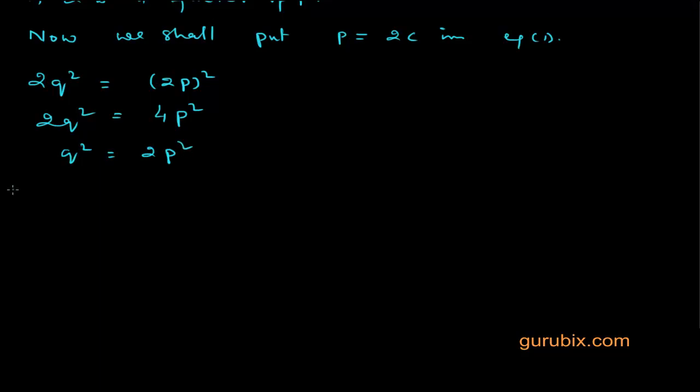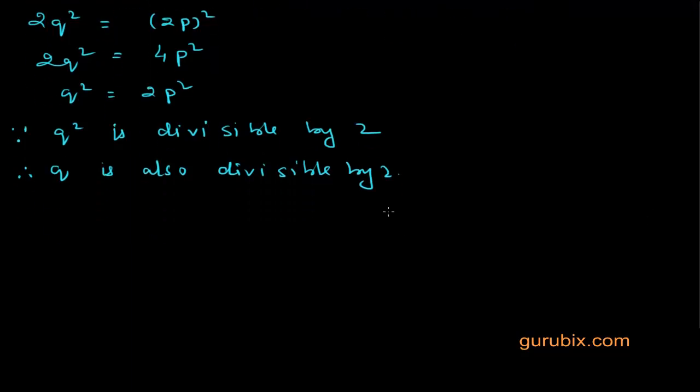Now what we observe? We observe that the value of q² equals 2c². So q² is divisible by 2. So by the previous theorem, q is also divisible by 2. And what we see now? We see, so 2 is a factor of q.